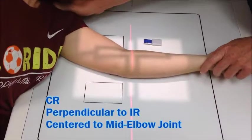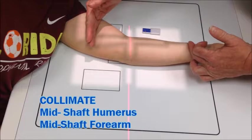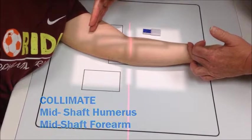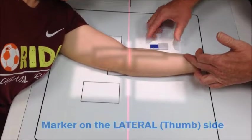The central ray is still in the same position right in the joint. Your collimation is the same. Mid-shaft of the humerus and mid-shaft of the forearm. You still need to mark on the lateral side of the arm.